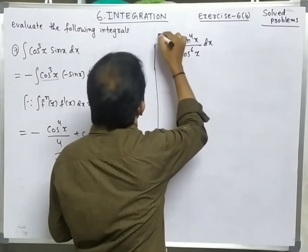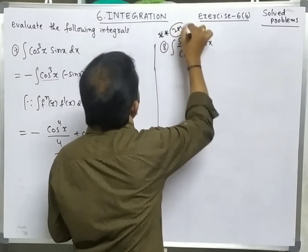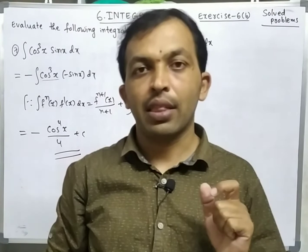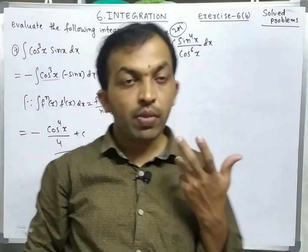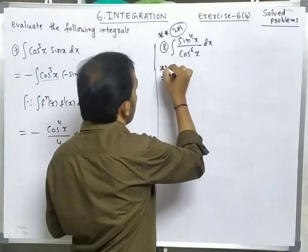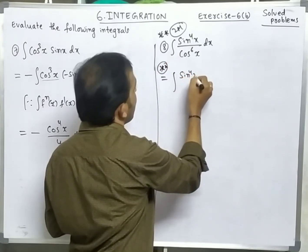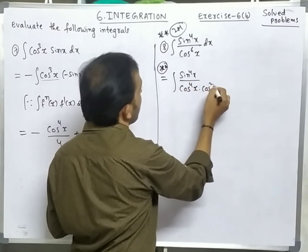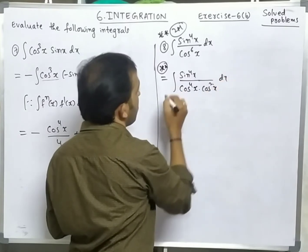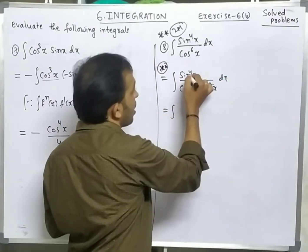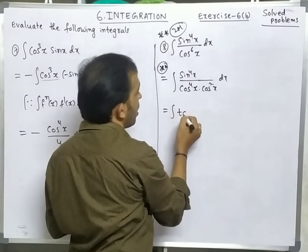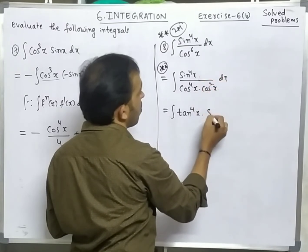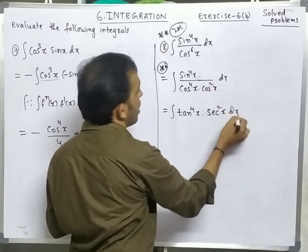Similar and important problem for two marks: integration of sin⁴x/cos⁶x dx. Important step: write cos⁶x as cos⁴x · cos²x. Then sin⁴x/cos⁴x = tan⁴x, and 1/cos²x = sec²x. So the integral becomes integration of tan⁴x · sec²x dx.